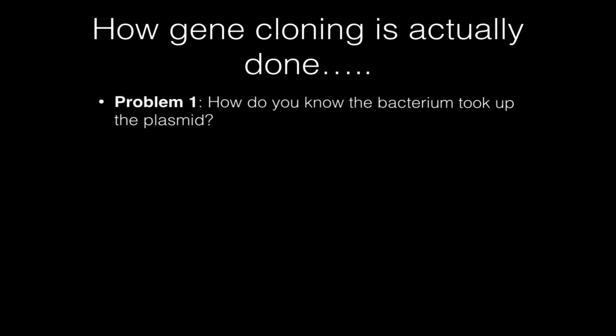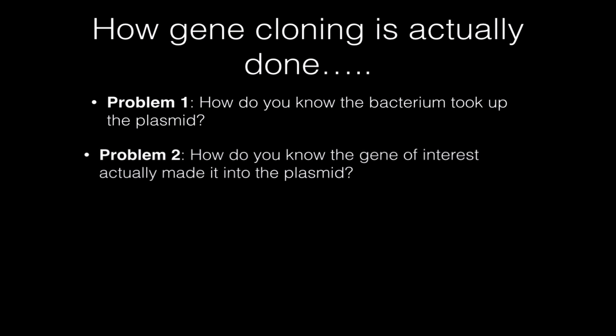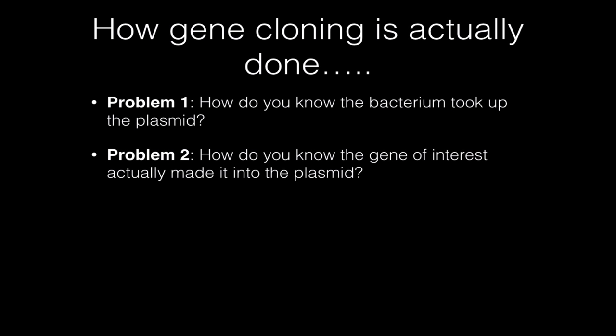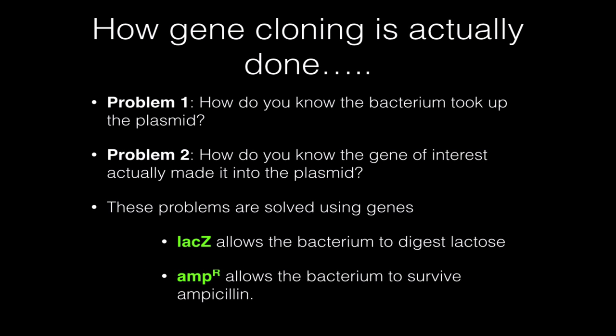Now, how do you actually do this? There are a couple of problems to overcome. First, you have to identify bacteria that have actually taken up the plasmid. Second, you have to figure out which plasmids actually contain the gene you tried to insert. To solve these problems, we're going to use two known genes: the LAC-Z gene, which gives bacteria the ability to digest lactose, and an ampicillin resistance gene, which gives bacteria the ability to survive in the presence of the antibiotic ampicillin.